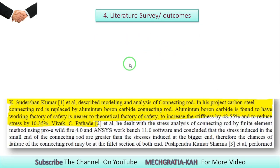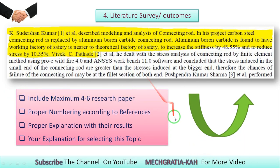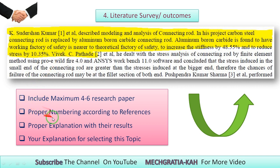The next topic is literature survey and outcomes. The literature survey is very important — it explains why you selected the topic for research, giving reference to other work and showing that you have advanced upon it. In the literature survey, you should include 4 to 6 papers and explain each one with proper numbering according to the reference list.